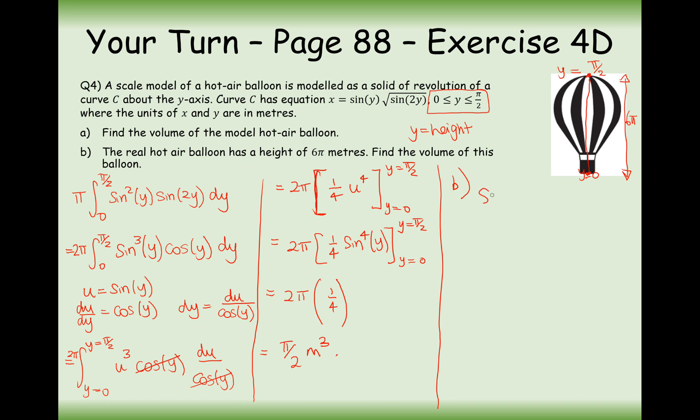If we want to work out the volume of this balloon, then the volume scale factor is going to be 12³. What we're going to have to do for the volume of the balloon is to multiply π/2 by 12³. And that gives me 864π. That's the answer for this question here.